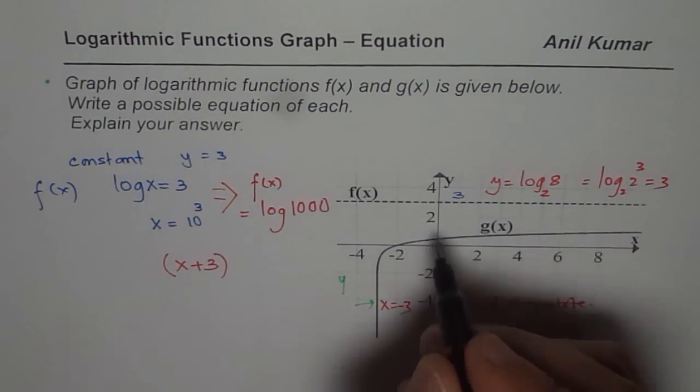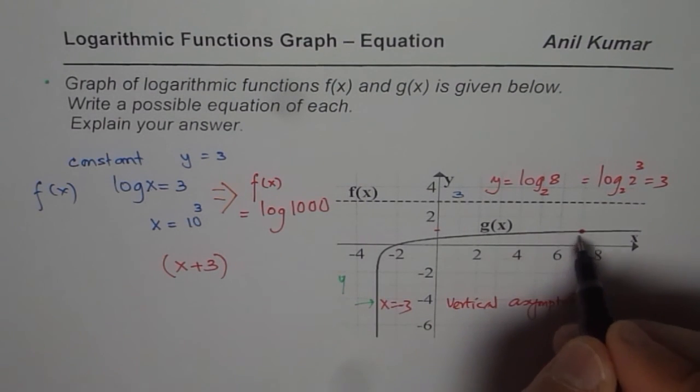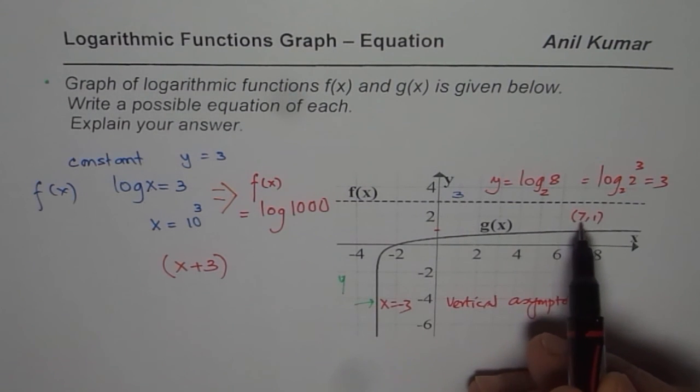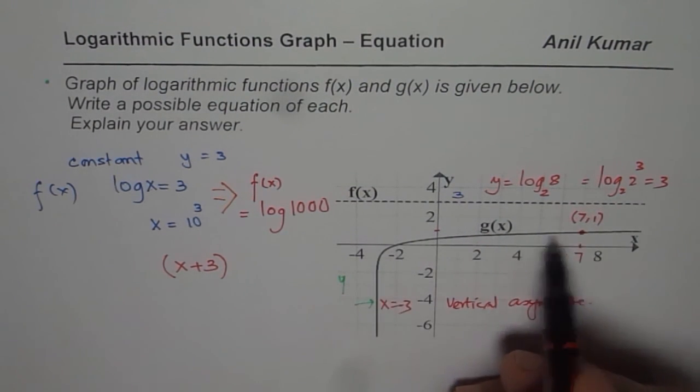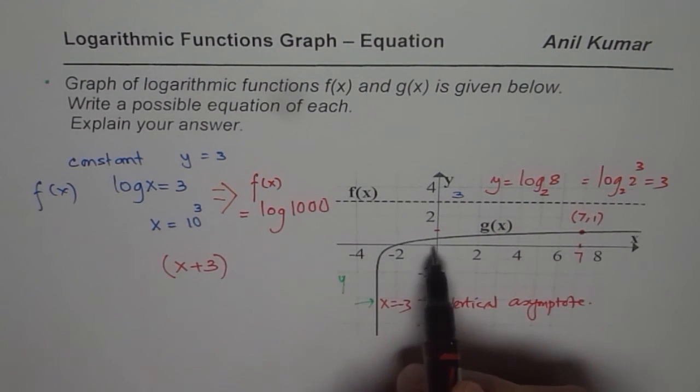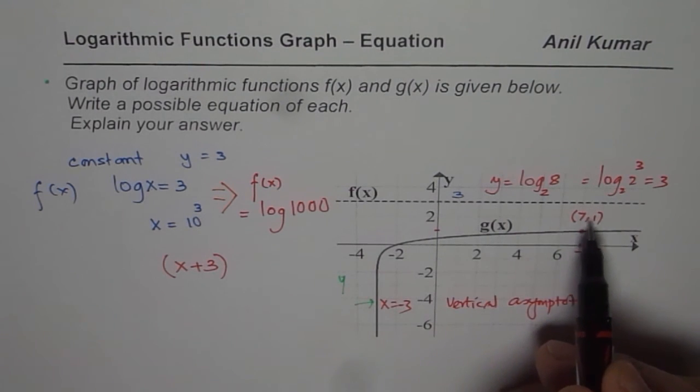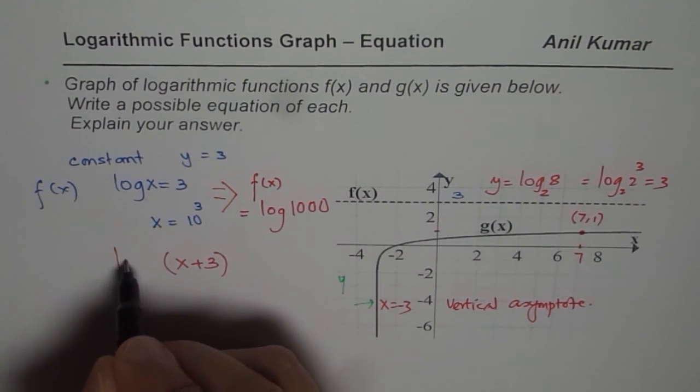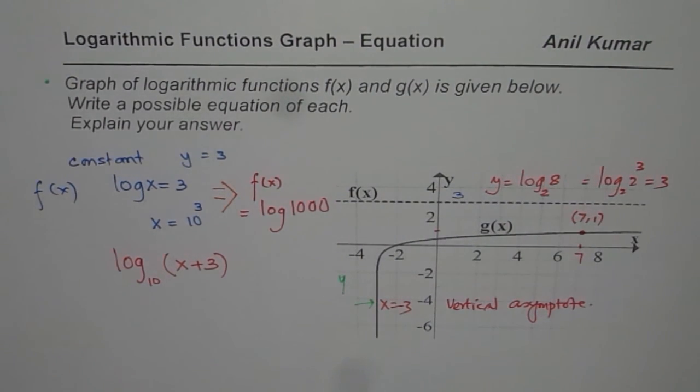Now, it is important to find when this function is 1. That will give us an idea. So we find that it is 1 at 7. So at 7, it is 1. Let me say that this point is 7, 1. Now this 7, 1 is because it has moved 3 units to the left. Since it moved 3 units left, it is 7, 1. If it was the original function, it was 3 units to the right. So it must have been 10, 1, correct? So 10, 1, that means at 10 the value is 1. Gives me an idea that the log function should be to the base 10.